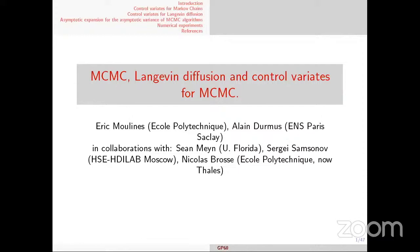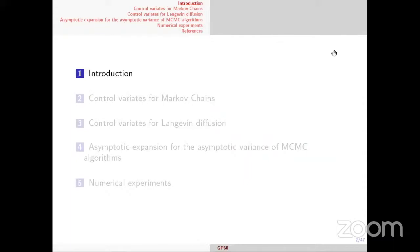Most of this work has been completed by two PhD students: Sergei Samsonov, who is working at Moscow in the HD lab at HSE, and Nikola Bross, who is now working at Thales but was working with me until two years ago. The outline of my talk: I start with a short introduction, then explain what control variates are for Markov chains, then for Langevin diffusion, and then show that for some Markov chains you can use control variates defined for Langevin diffusion. Finally, I will conclude with some numerical experiments.